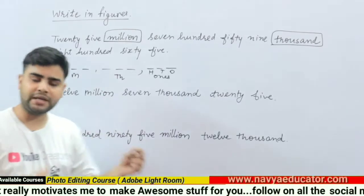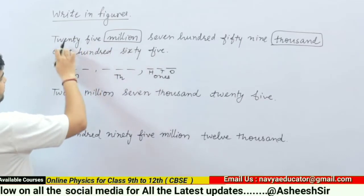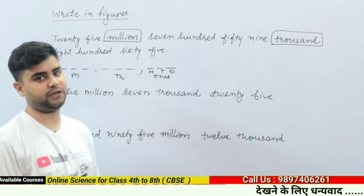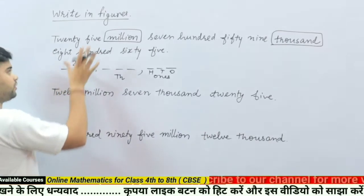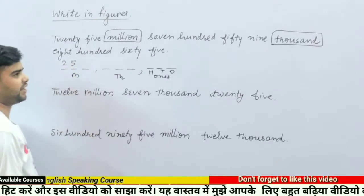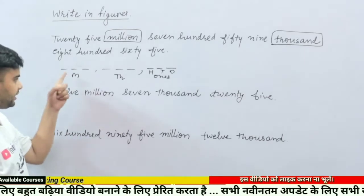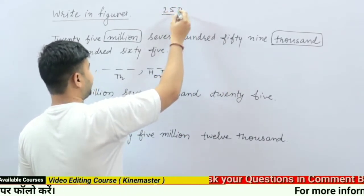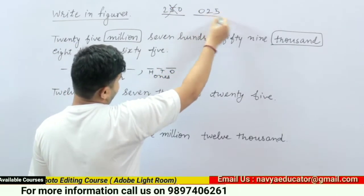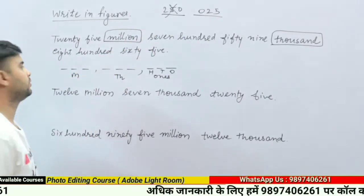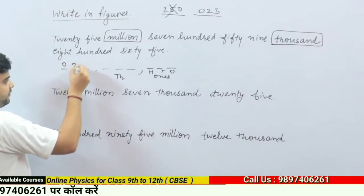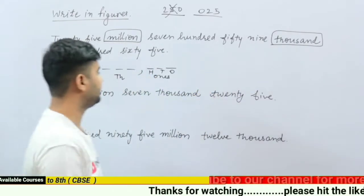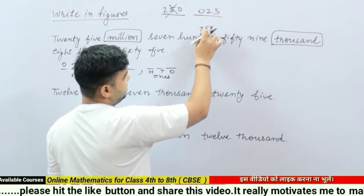Now check how many millions and thousands are given. Here we have 25 million, so in the millions column we write 25. Keep in mind you can't skip any digit — you must fill all three digits. So if you write 25 in a three-digit space like '250', that would be wrong. You must write it as '025' — that is, zero then 25 — so the value stays 25. Zero has no value, so writing 025 correctly represents 25 million.